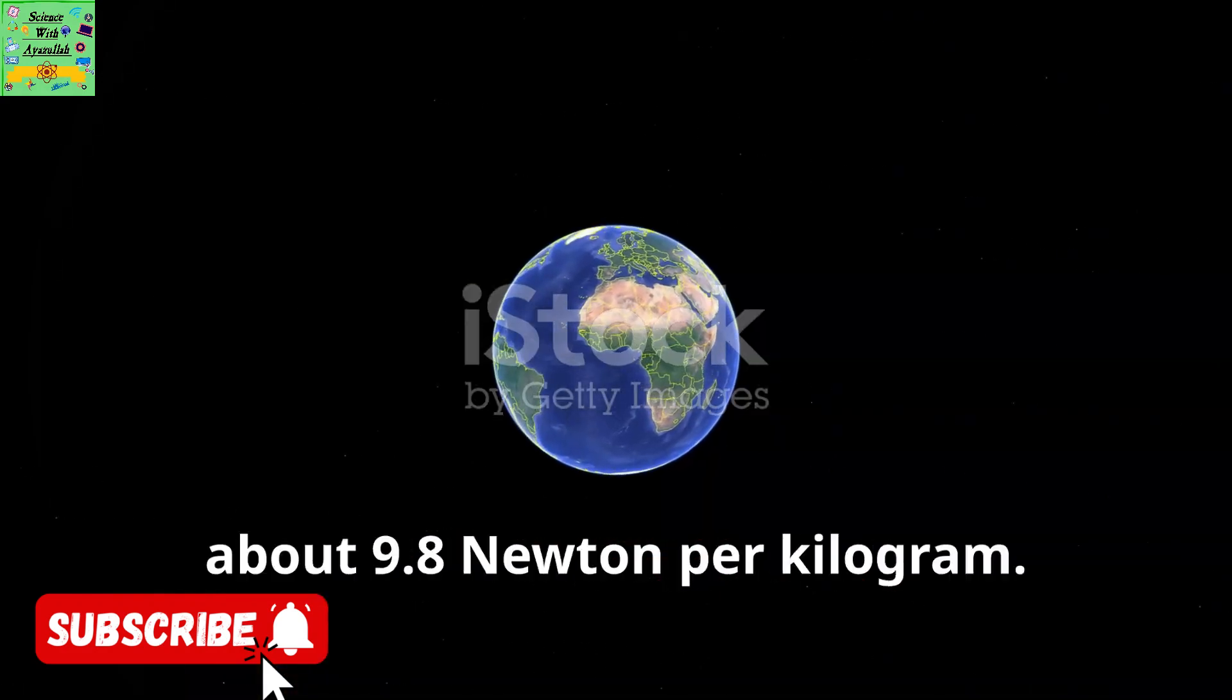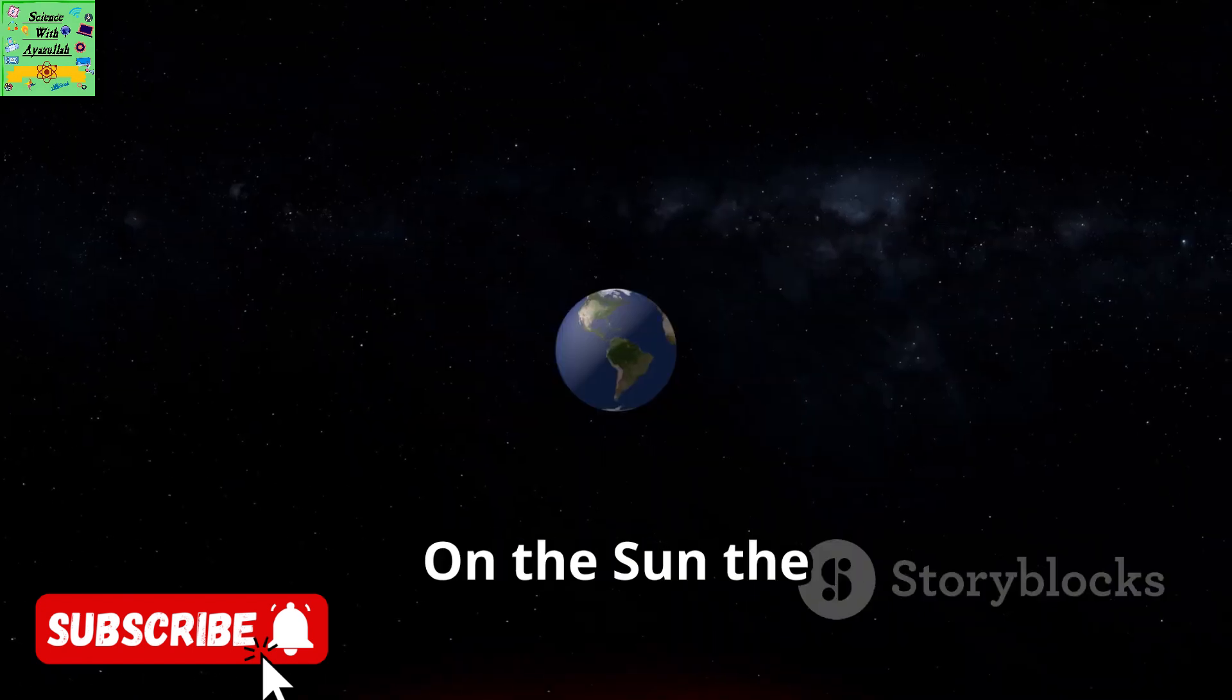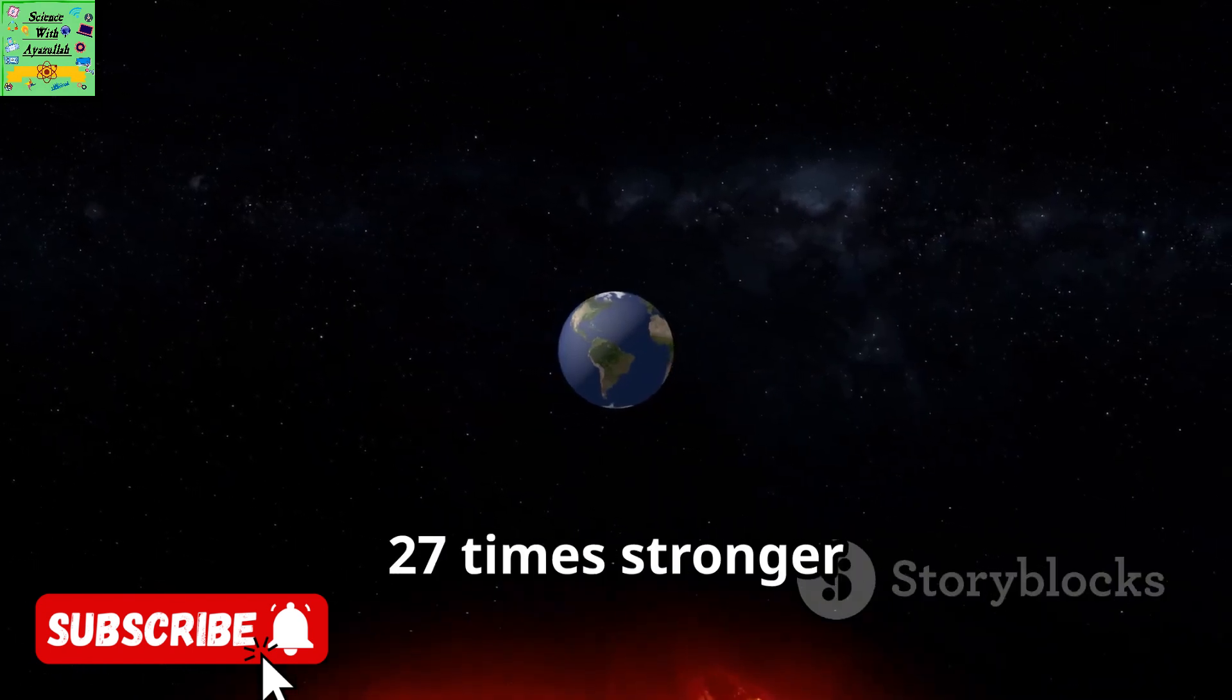The strength of gravity on Earth is about 9.8 newtons per kilogram. On the Sun, the surface gravity is 27 times stronger than Earth.